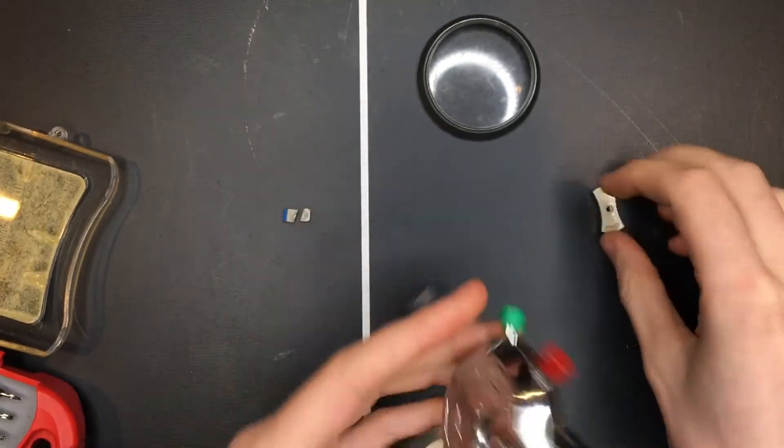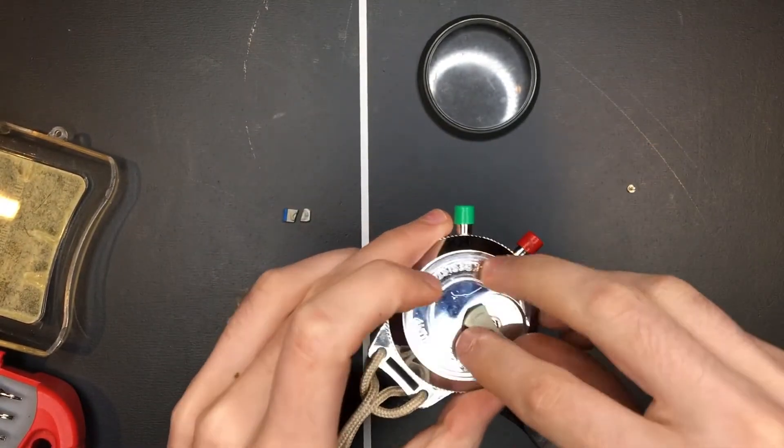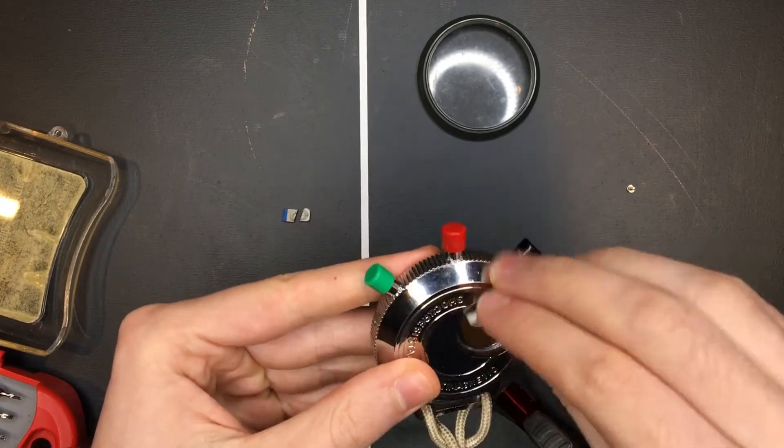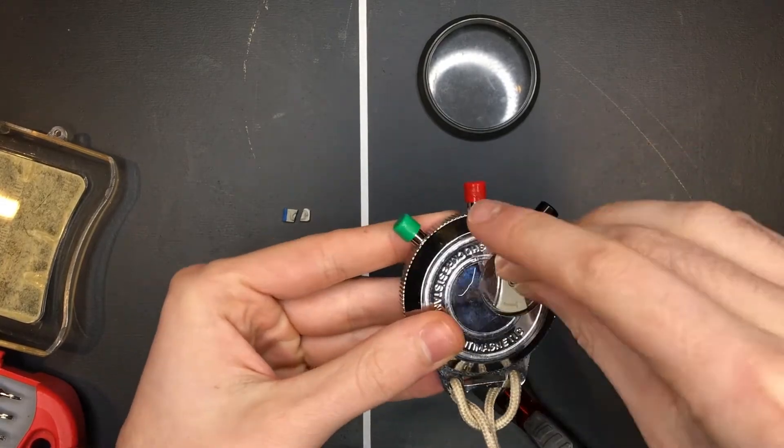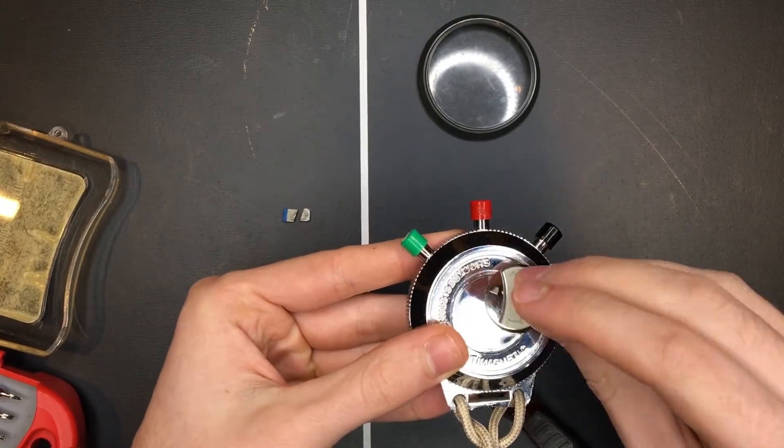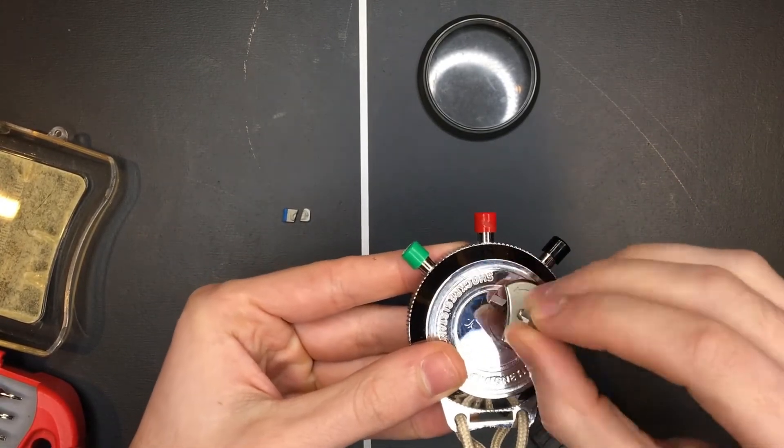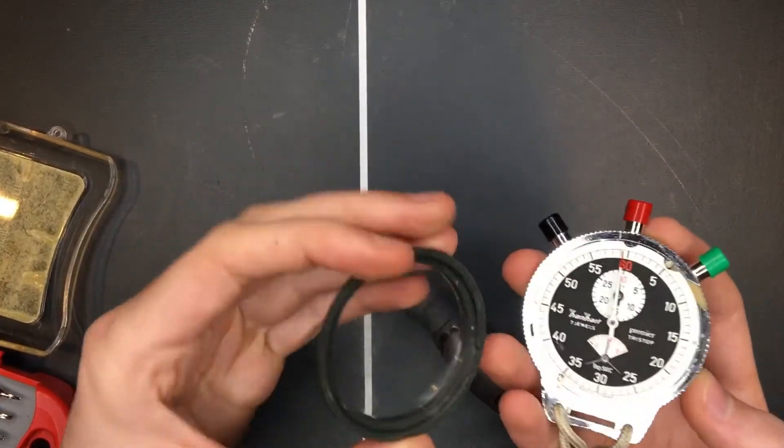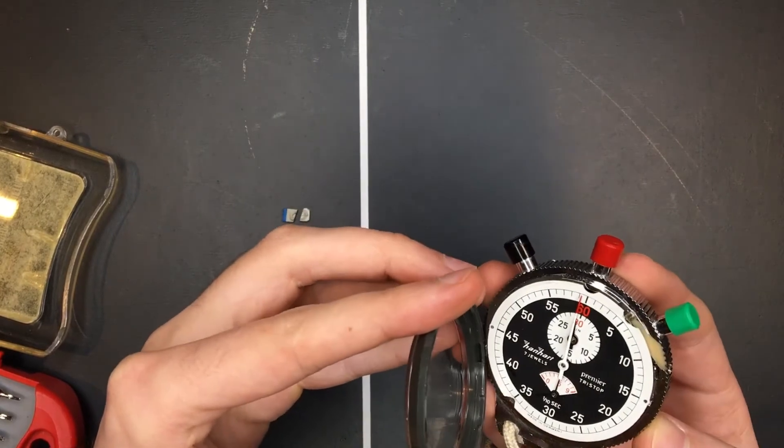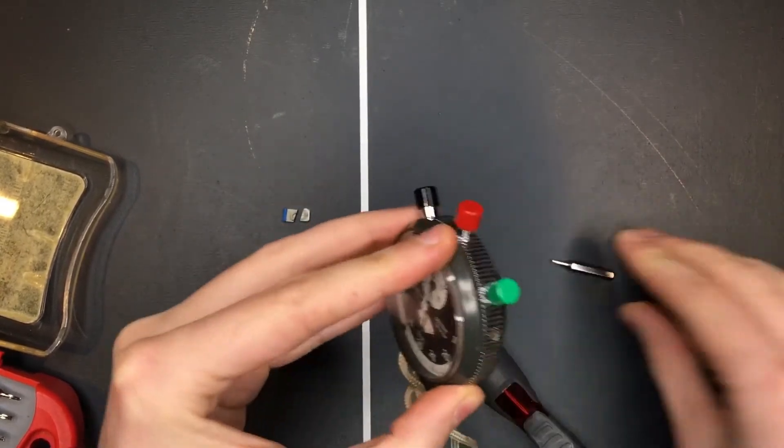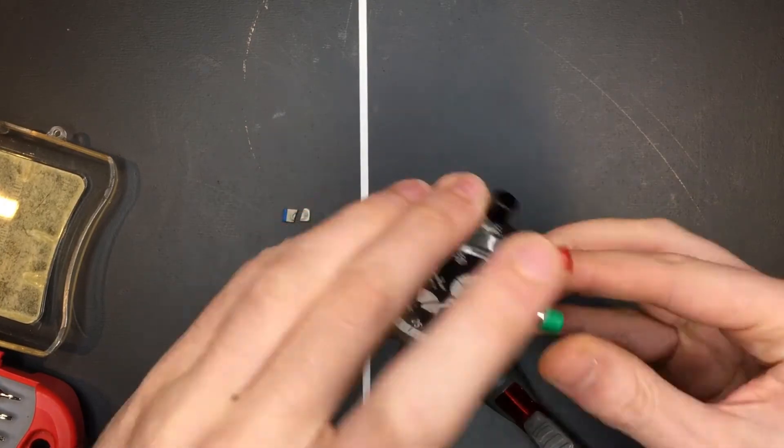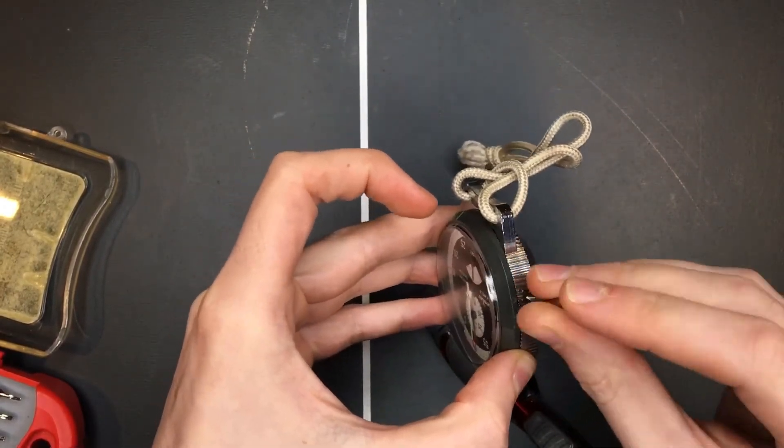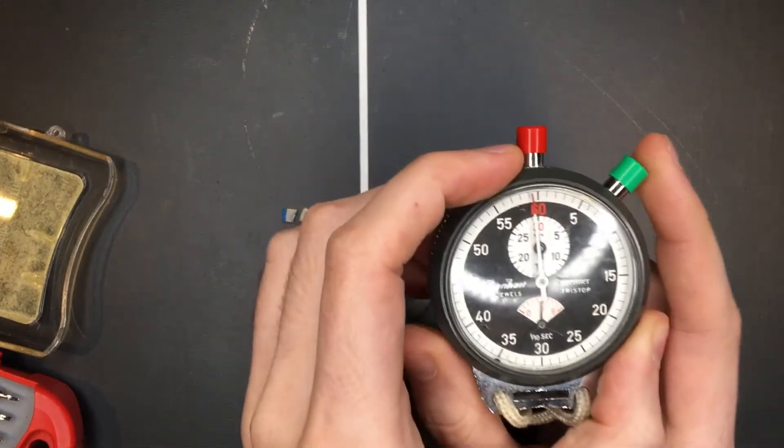So now I need to put this back on the winding wheel. There we go. So now let's just go back to the main case here. Tighten up these two bolts. And there we go.